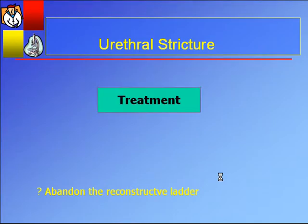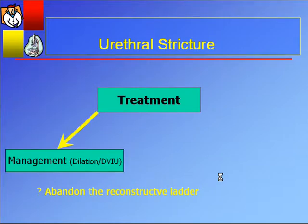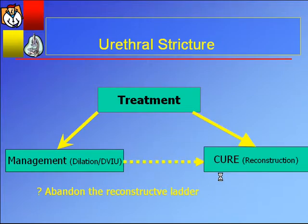When treating urethral stricture, we have to think about which route to choose: manage with dilation or urethrotomy, or try to cure the disease where reconstructive surgery comes into play. Often patients will have a trial of urethrotomy and then proceed to reconstruction if they fail. Some urologists have advocated abandoning the reconstructive ladder — if somebody has stricture characteristics that would favor reconstruction, just proceed directly to reconstruction. In fact, it's probably actually more cost-effective.